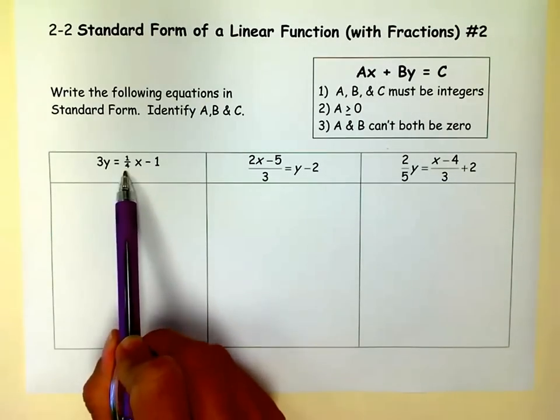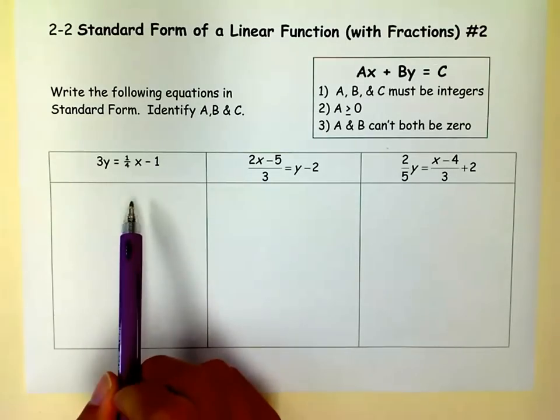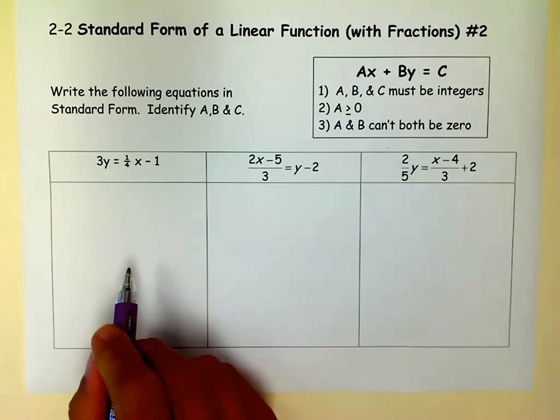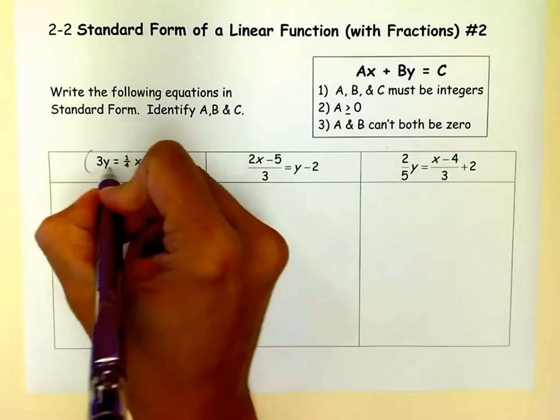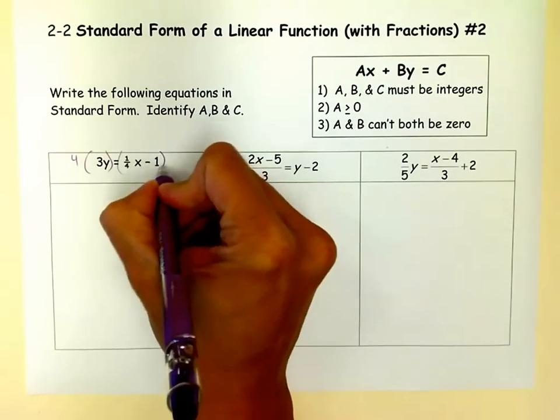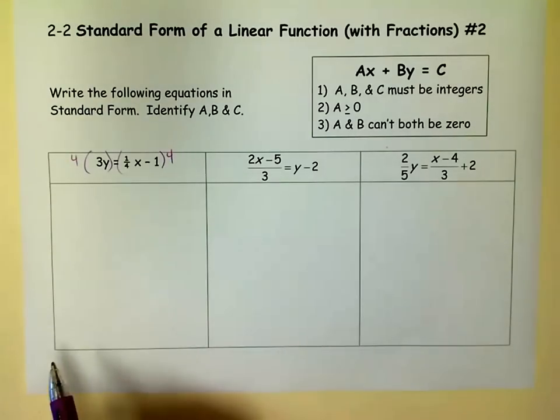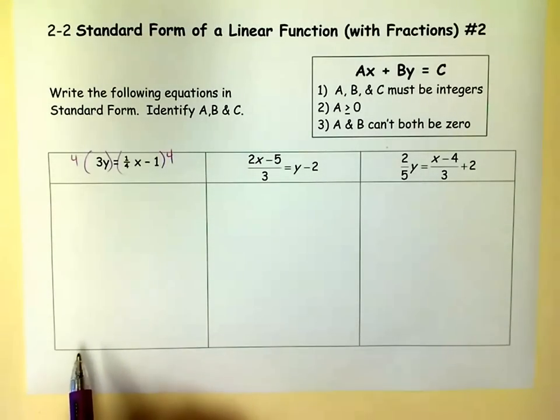and then we know that you have to have integers. We know that we have to do a couple things. We have to move the x over, and we have to get rid of the fractions. Well, I like to get rid of the fractions first, because it makes it a little bit easier. So to get rid of the fractions, I would multiply both sides by 4.